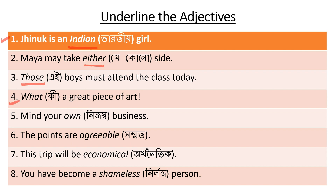Number 4: What a great piece of art. That is a great piece of art. So here 'what' is the adjective. Number 5: Mind your own business. 'Your own business' - here 'your' is the adjective.